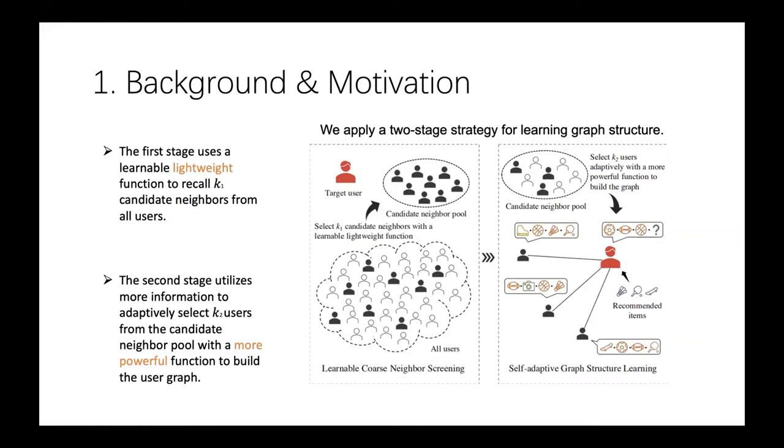The second stage is the self-adaptive graph structure learning, based on the first stage results, and can adaptively select a smaller number of neighbors. This stage utilizes more information, including users' recent interactions, to predict which users' recent behavior has the most significant influence.